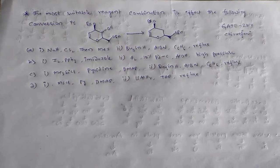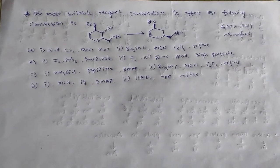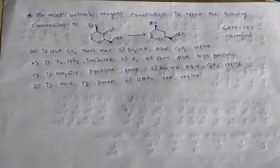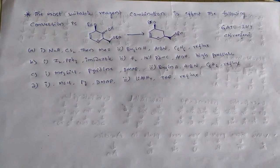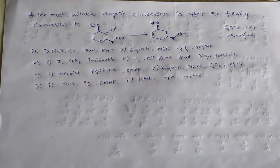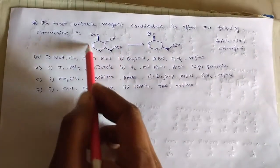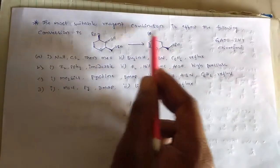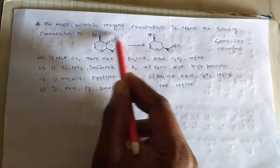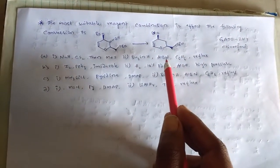Hi, this is Chiranjeevi. This question appeared in GATE 2014. The question is: the most suitable reagent combination to affect the following conversion. Check the conversion — reactant converts to product. Here the disappearance of OH group takes place, so this is the change — the total reaction.